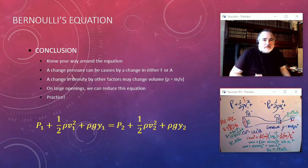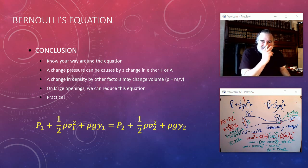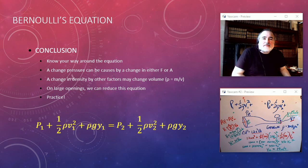So in conclusion, as I said, know your way around the equation. A change in pressure can cause a change in either a force or an area. A change in density by other factors may change volume. On large openings, we can reduce this equation, like I did with the tank. Remember your equation of continuity, and practice. So there you have it—Bernoulli's equation. Good luck.